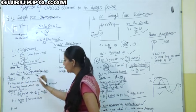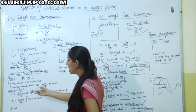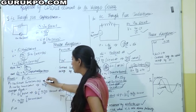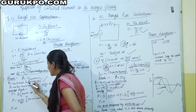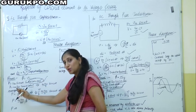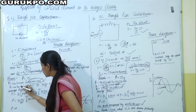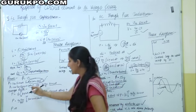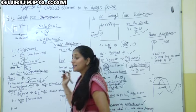The instantaneous power P = V × I. Putting V = Vm sin(ωt) and I = Im sin(ωt + 90°), and noting that sin(ωt + 90°) = cos(ωt), we get P = Vm × Im × sin(ωt) × cos(ωt). Using the identity 2 sin(ωt) cos(ωt) = sin(2ωt), the instantaneous power becomes P = (Vm × Im / 2) × sin(2ωt).